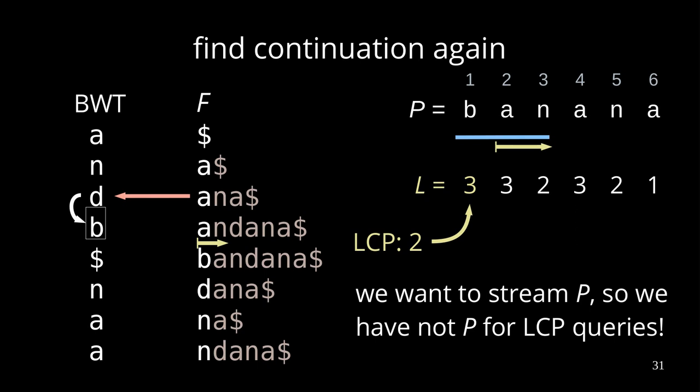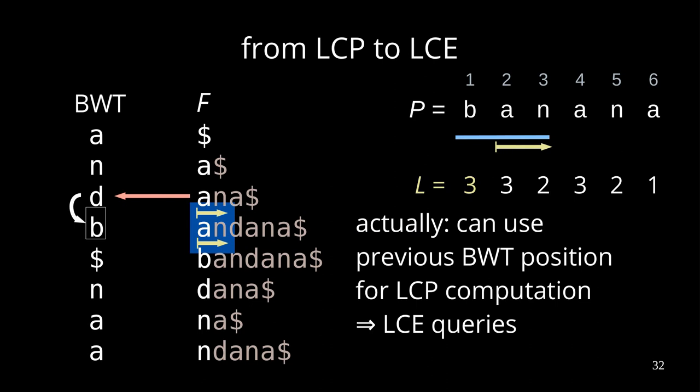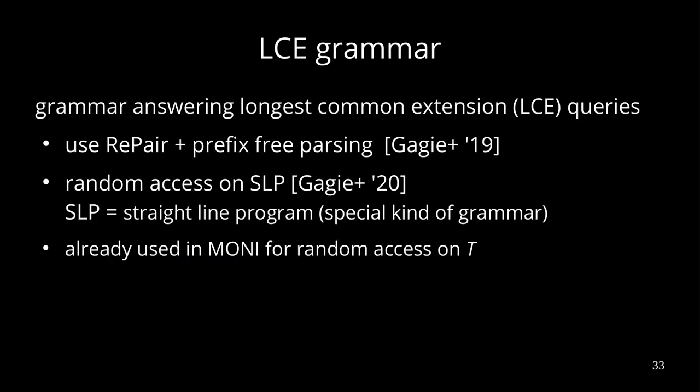Now what I promised is that we want to stream P, so actually we don't have P available for the LCP queries. Luckily, we can just use the previous text position — namely the text position of the red arrow — for the LCP comparison. So we use two different text positions for the LCP, and this is a special kind of LCP called LCE, which stands for Longest Common Extension.